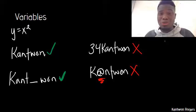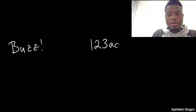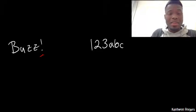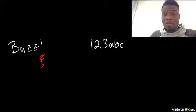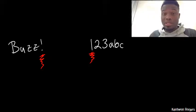On the next slide there's a multiple choice question — choose all the valid variable names. The variable names that were not valid were 'buzz!' and '123abc'. 'buzz!' is not valid because it contains a special character — that exclamation point makes it invalid. '123abc' is not valid because it starts with a number. If it had started with a letter, like the other choice 'abc123', that would be a valid variable name.